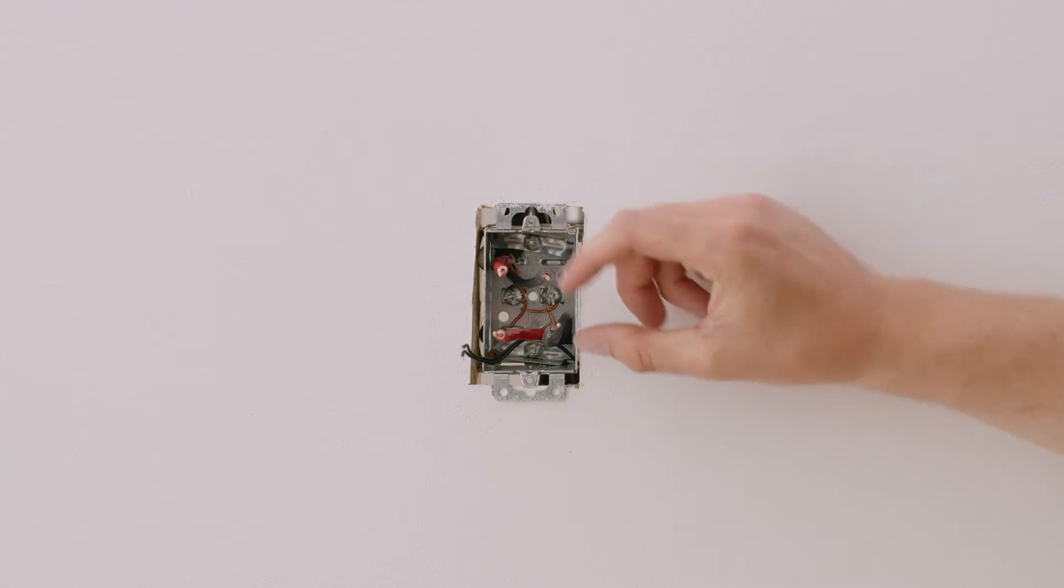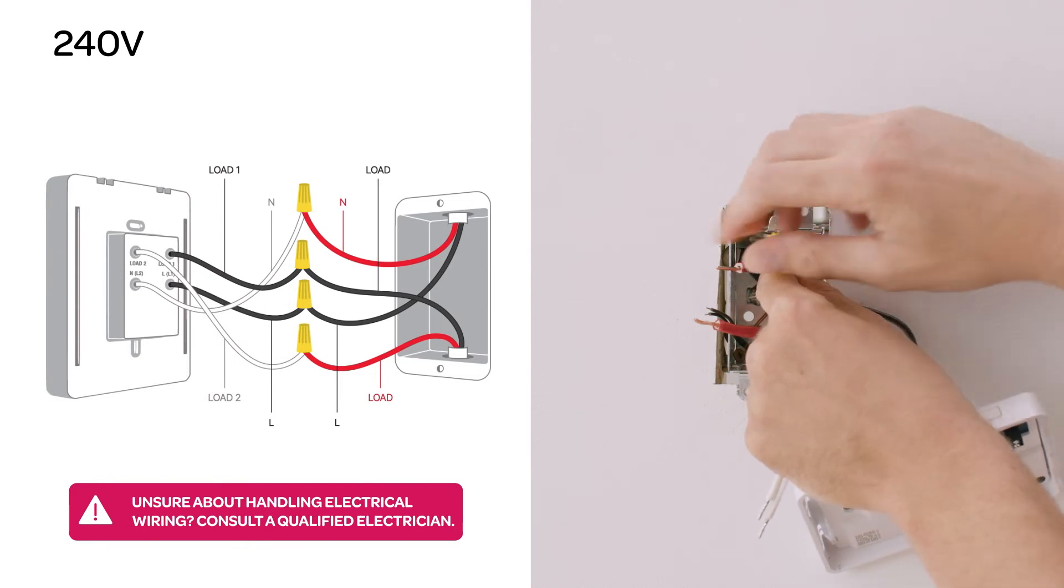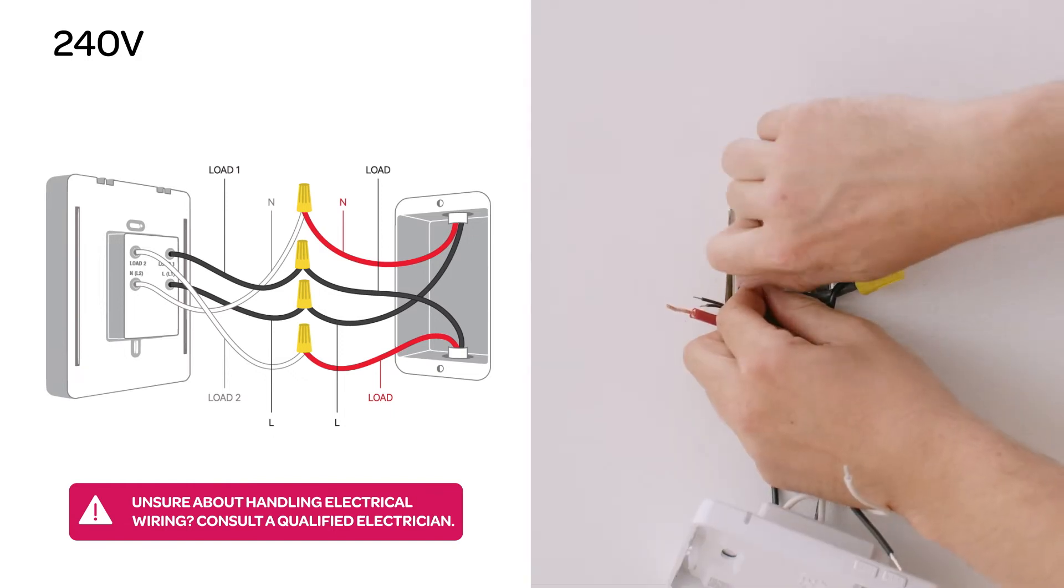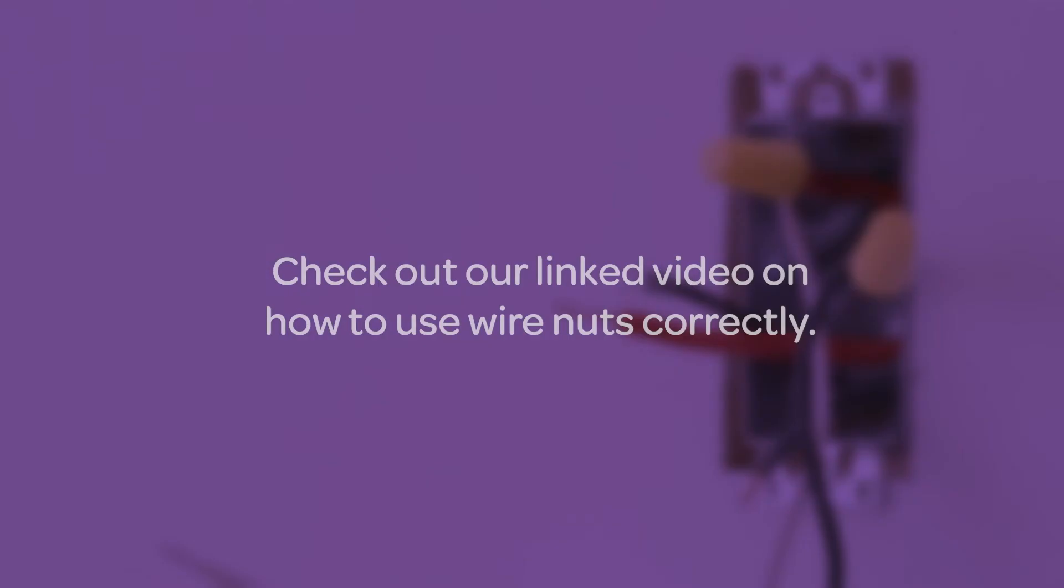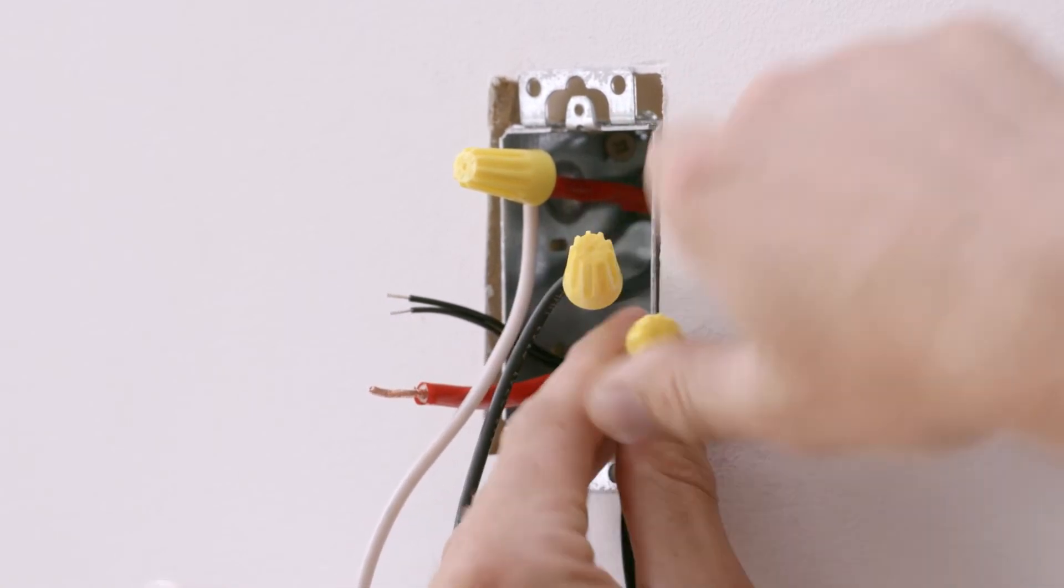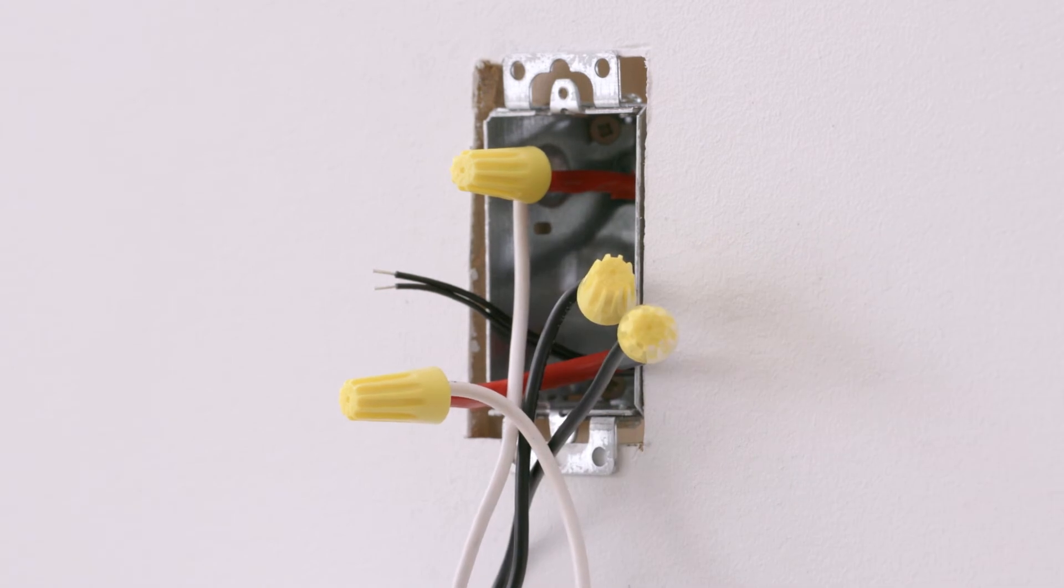In a 240 volt system, you'll see two black wires and two red wires. Using the new wire nuts included with your Mesa, connect the black wire that brings power from the electrical panel to your Mesa's L1 wire. Then, connect the red wire from your panel to your Mesa's L2 wire. Connect the black wire from your system's heating mat to your Mesa's L1 wire. Then, connect the red wire from your heating mat to your Mesa's L2 wire.